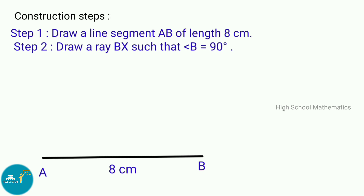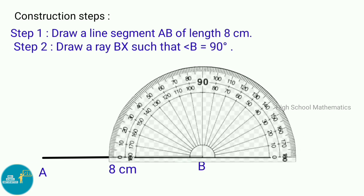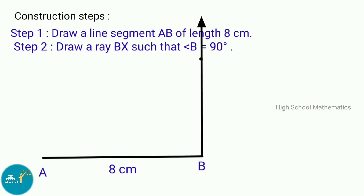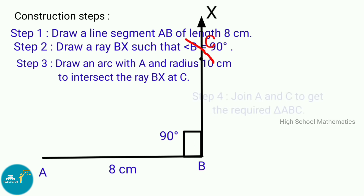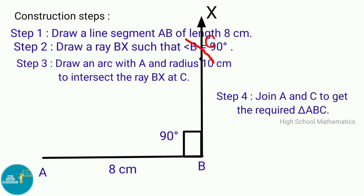Step 2: Draw a ray BX such that angle B equals 90 degrees. Step 3: Draw an arc with center A and radius 10 centimeters to intersect ray BX at C. Step 4: Join A and C to get the required triangle ABC.